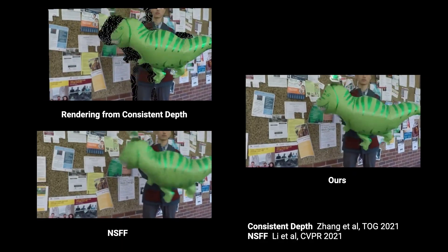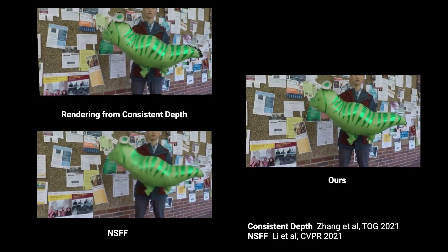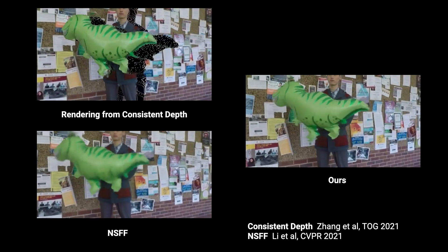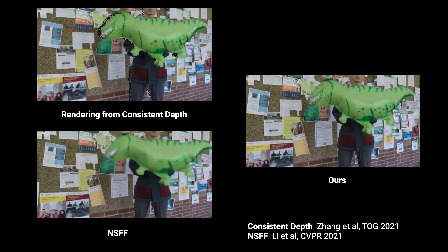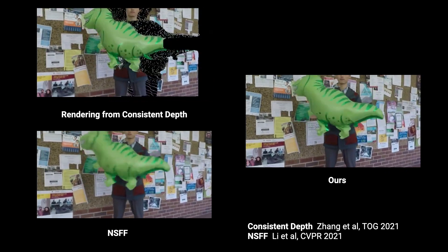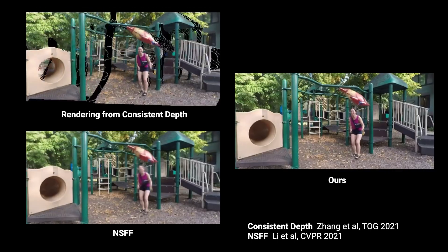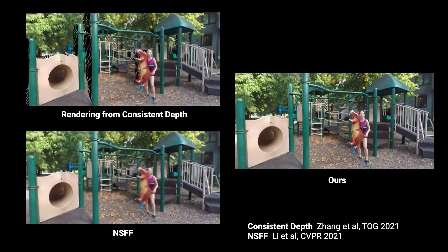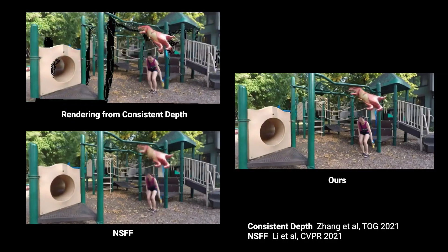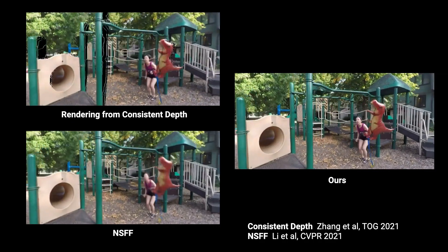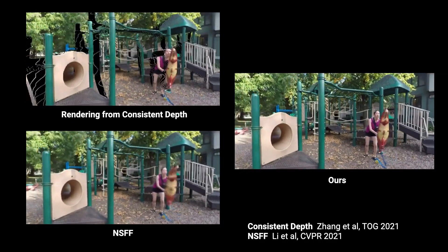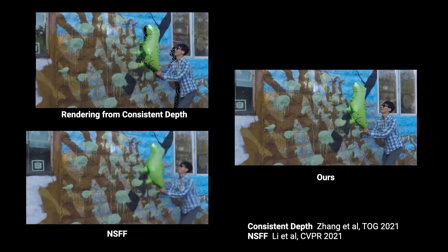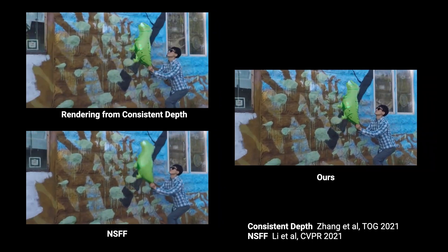Now we compare our approach with baselines. Here we show comparisons with depth-based warping using consistent dynamic video depth, and with a dynamic NeRF method called Neural Scene Flow Fields. Depth-based rendering generates holes, fails to model complex scene geometry, and cannot capture view-dependent effects. NSFF produces realistic backgrounds but struggles to render detail in dynamic regions, leading to excessive blurriness.